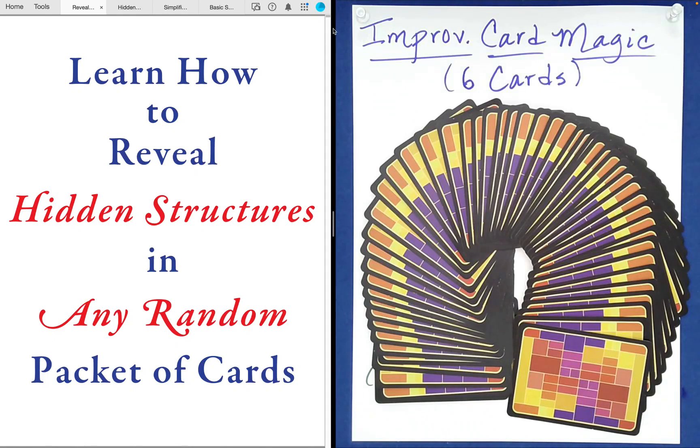This is the second video in the series entitled Improv Card Magic. Today we're going to work with six card packets and this will give us practice looking for and recognizing these three special structure types, and then we will show you how we can preserve them and convert them from one to the other and then in the end finish with a very surprising reveal.